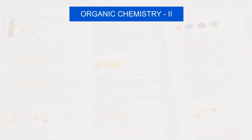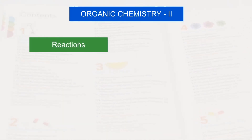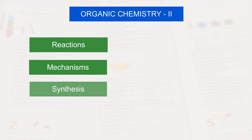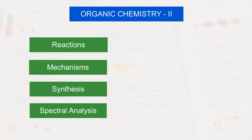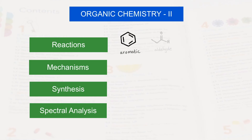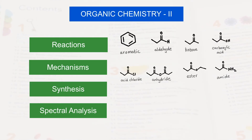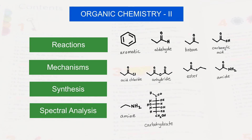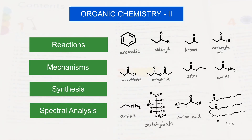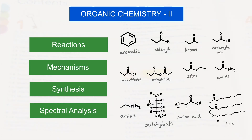In Organic Chemistry 2, we will focus on the reactions, mechanisms, synthesis, and spectral analysis of many functional groups like aromatic compounds, aldehydes, ketones, carboxylic acids, acid derivatives, amines, carbohydrates, amino acids, and lipids. Throughout the two courses, we will be discussing the biological significance of these functional groups. For more details, you may look at the attached syllabi.